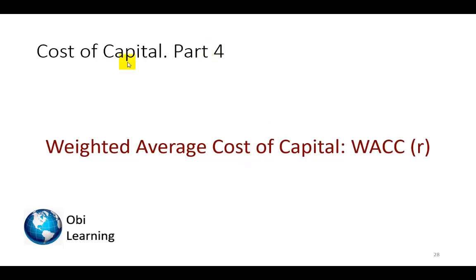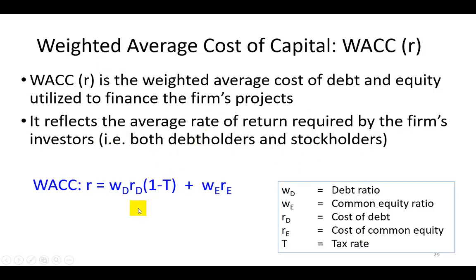Hello, in part four of my cost of capital series, we're going to put it all together and show the calculation of the weighted average cost of capital, which is the weighted average cost of debt, RD, and RE, the cost of common equity. Notice that each cost component is weighted by the percentage of money generated from that particular source.